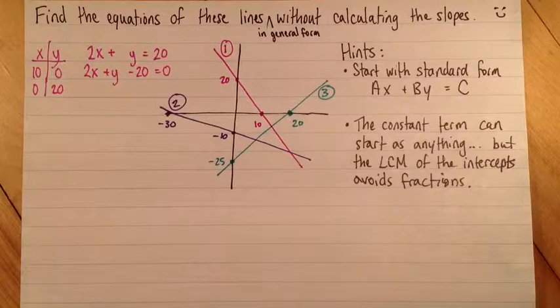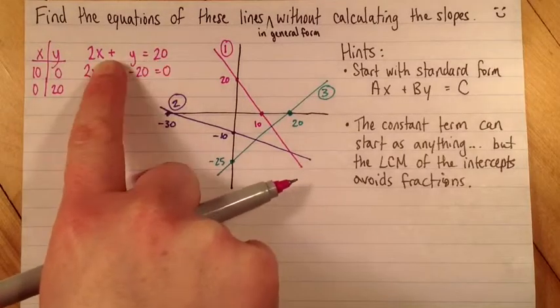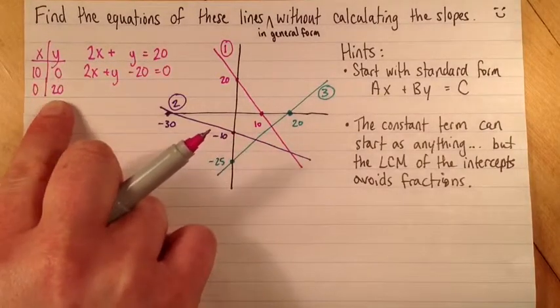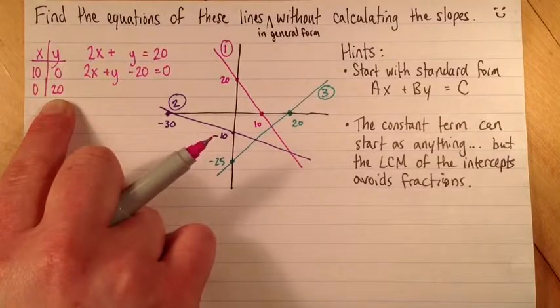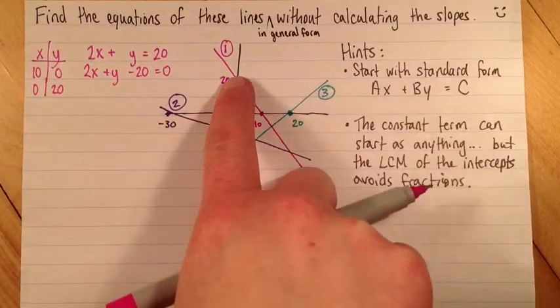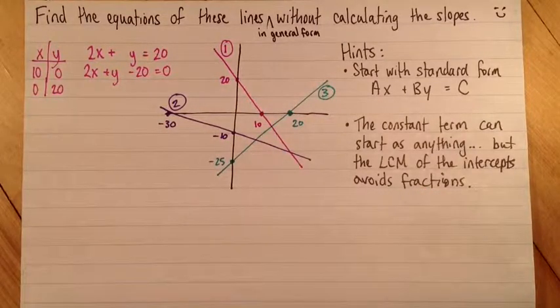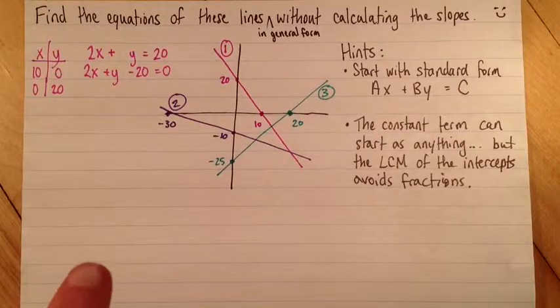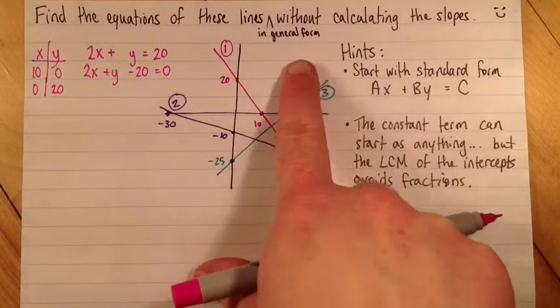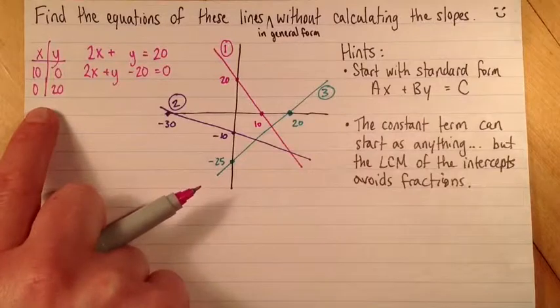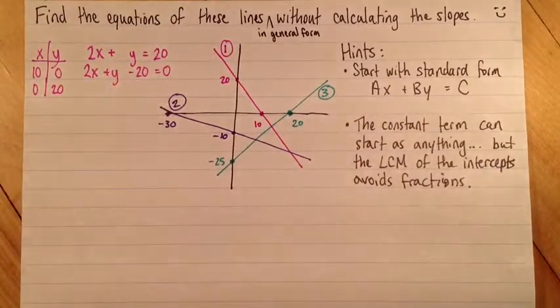I think it's worth making a point that this little trick works because I'm looking at the intercepts. So this trick only works if we know the intercepts. Otherwise, it takes more effort than just calculating the slope and then using another form. But if we know the intercepts, we can just do that trick right there.